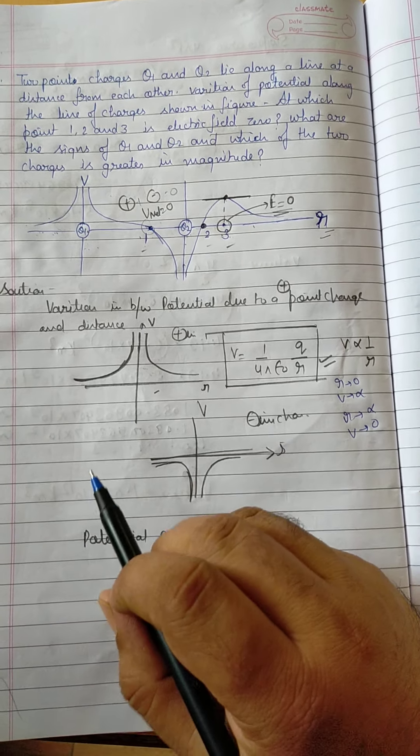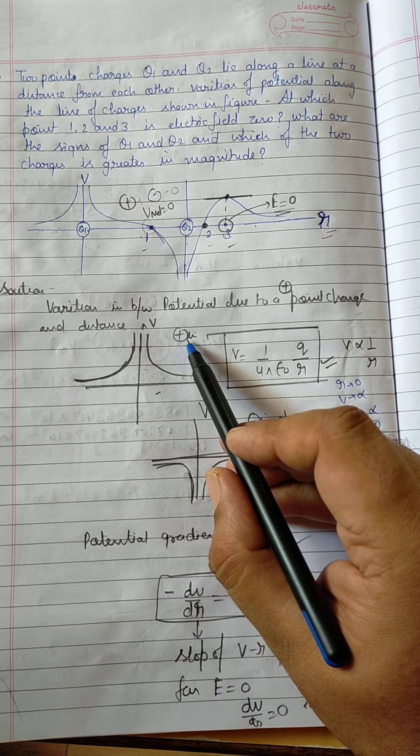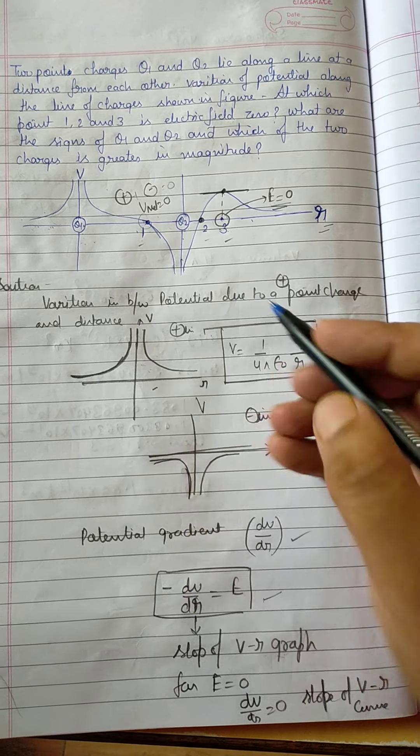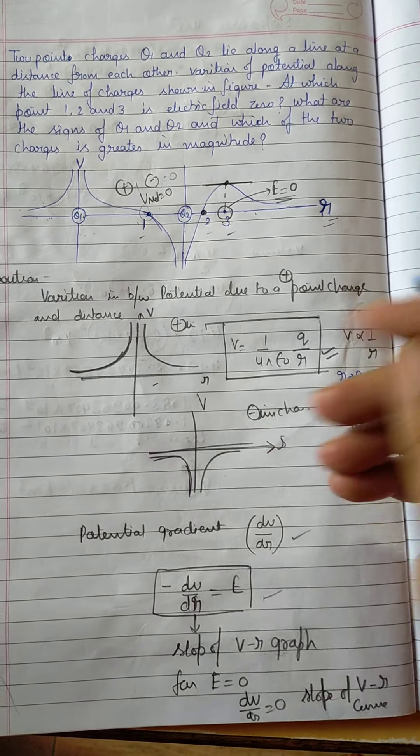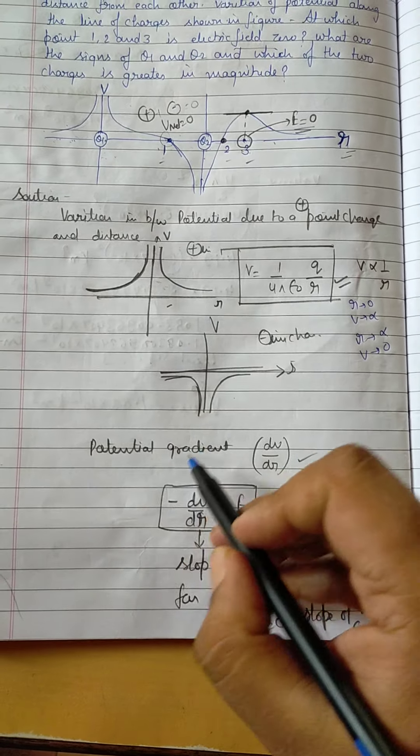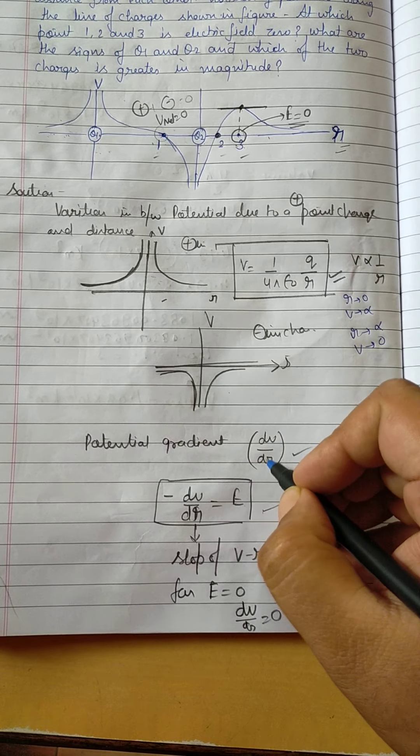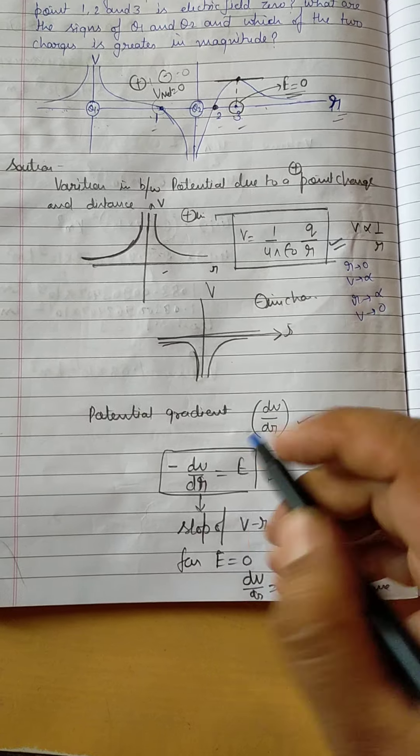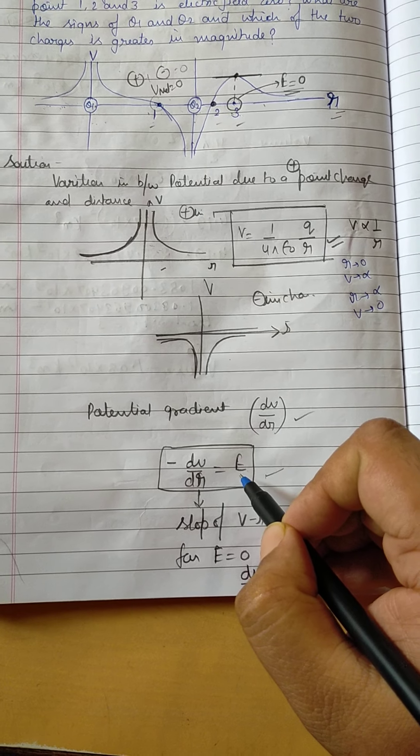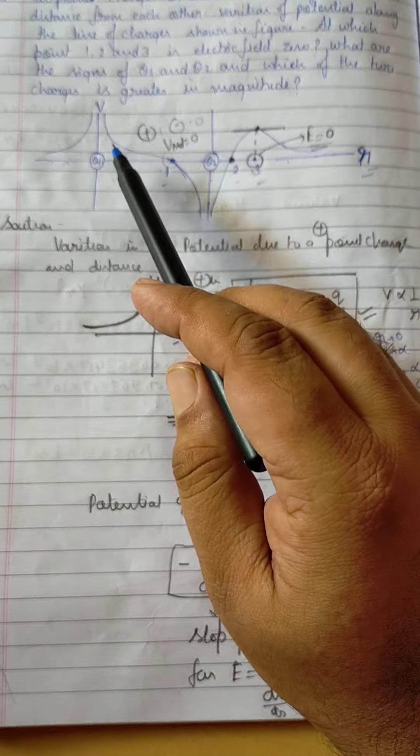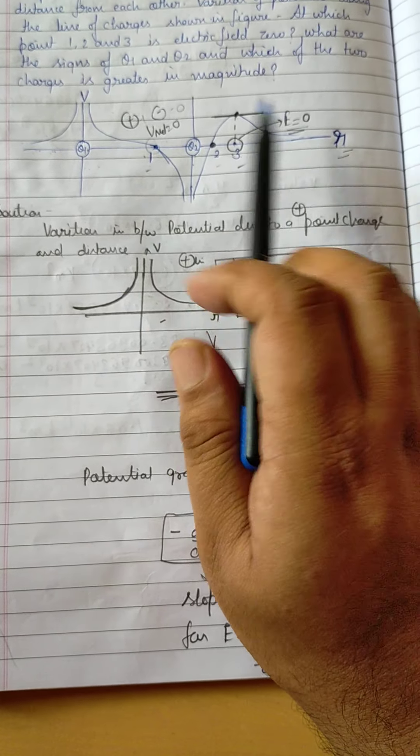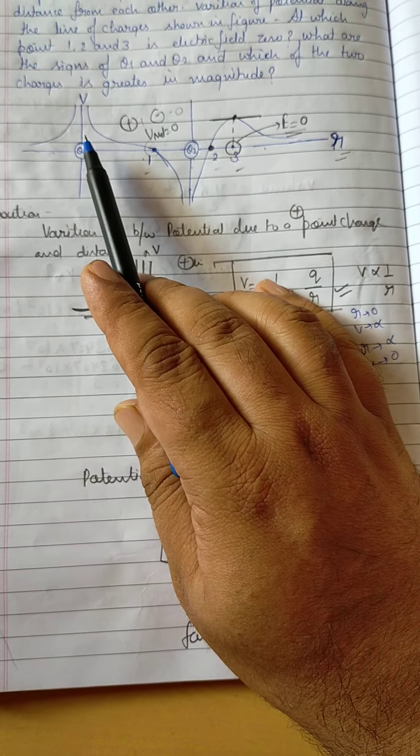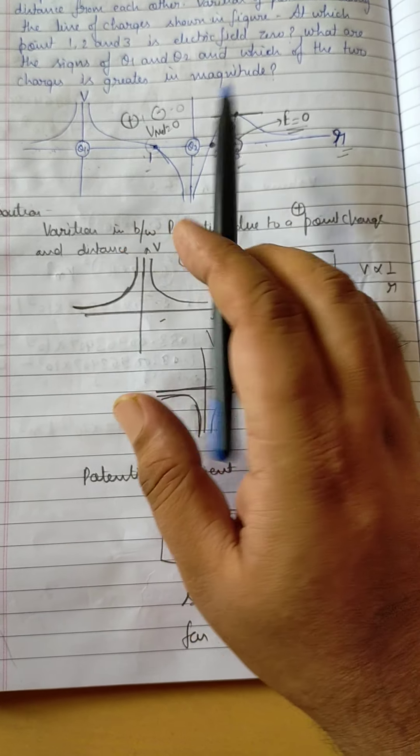This time, so positive charge की due to potential का form, potential का graph आपका यह हुआ, and negative charge की due to graph यह हो जाएगा। Now what is potential gradient? dV/dr is called potential gradient, and minus dV/dr is called E. यहाँ पे आपको जो graph given है वो V and r के between given है।